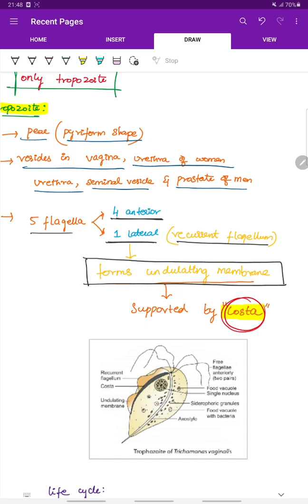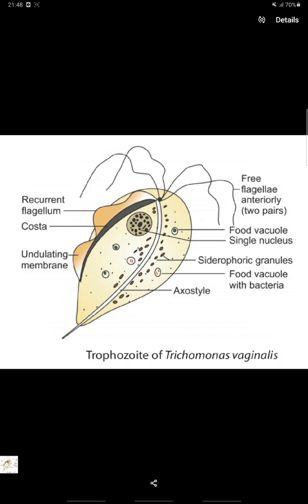This is the picture of trophozoid of Trichomonas vaginalis. Here it has 5 flagella.